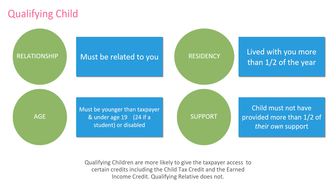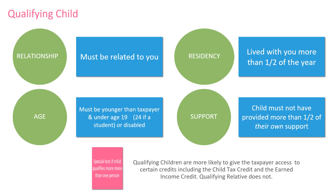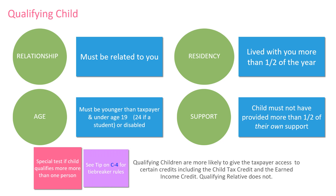One more thing to know about qualifying children: if two taxpayers have the same qualifying child, only one taxpayer can claim the tax benefits for that particular qualifying child. If two taxpayers who could claim a qualifying child cannot agree, you would need to apply the tiebreaker rules — these are the rules that the IRS will use to resolve a dispute if two people file claiming the same qualifying child. You can find the chart in your 4012.